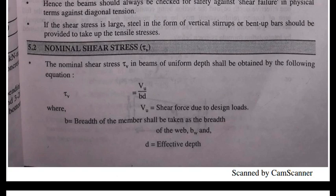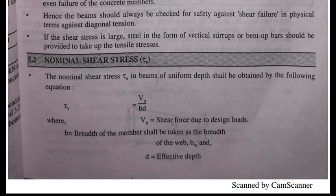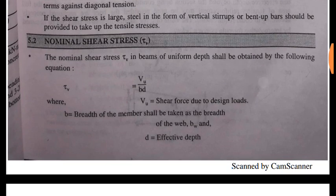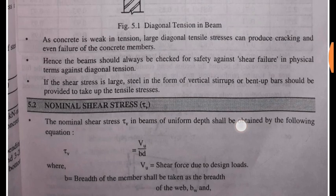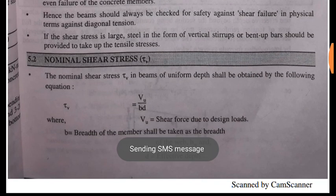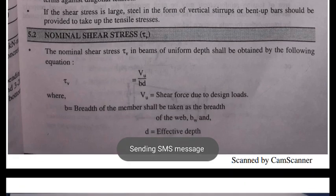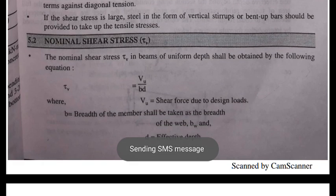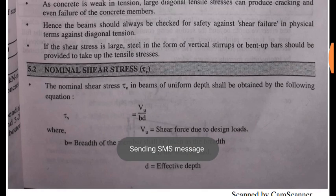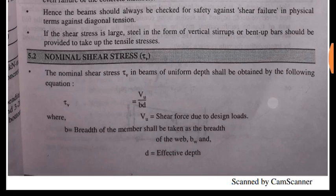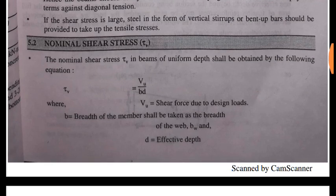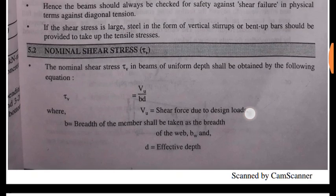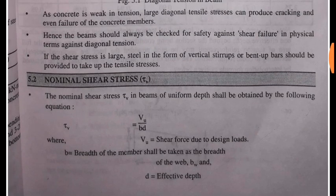Nominal shear stress, tau v — I will explain it. Nominal shear stress is found by the formula: tau v equals Vu divided by bd. Here Vu is the shear force due to the design load. b is the width of the member, and d is the effective depth.